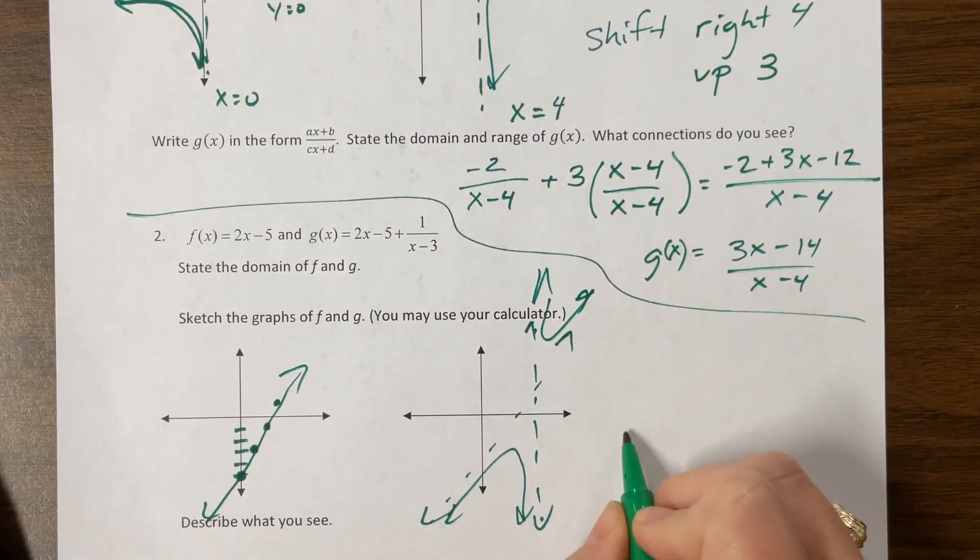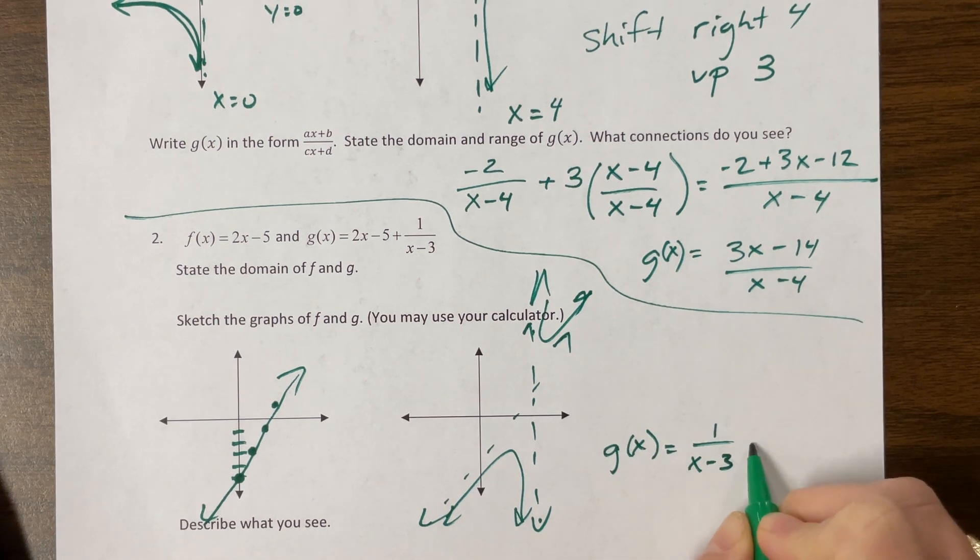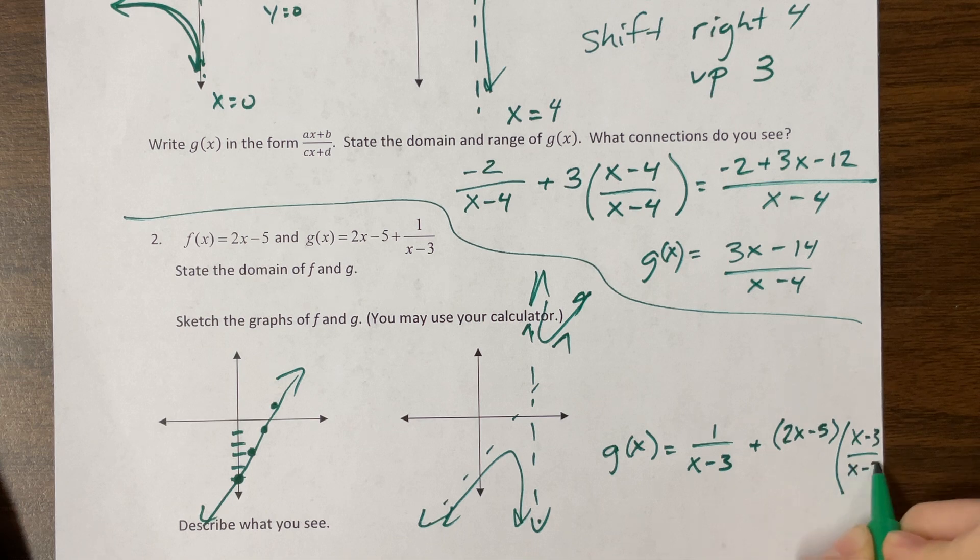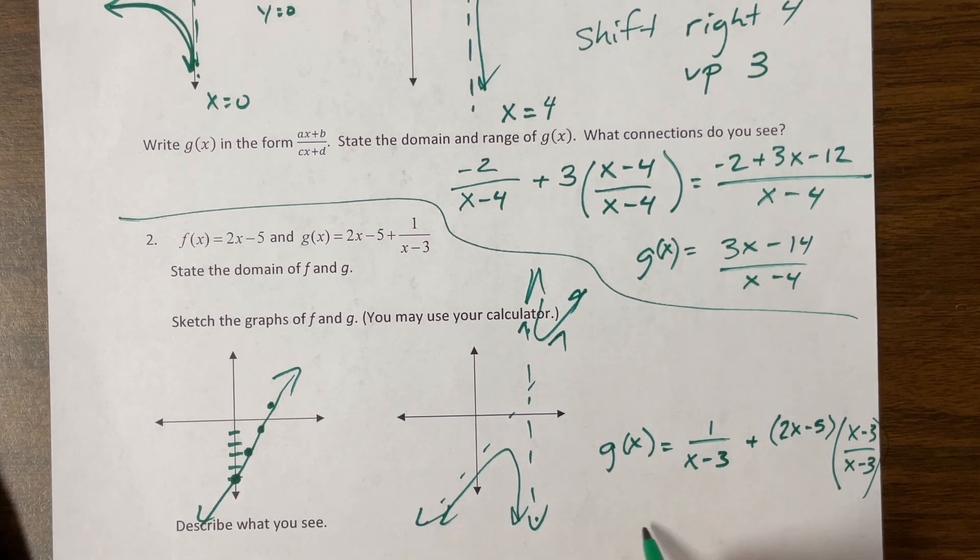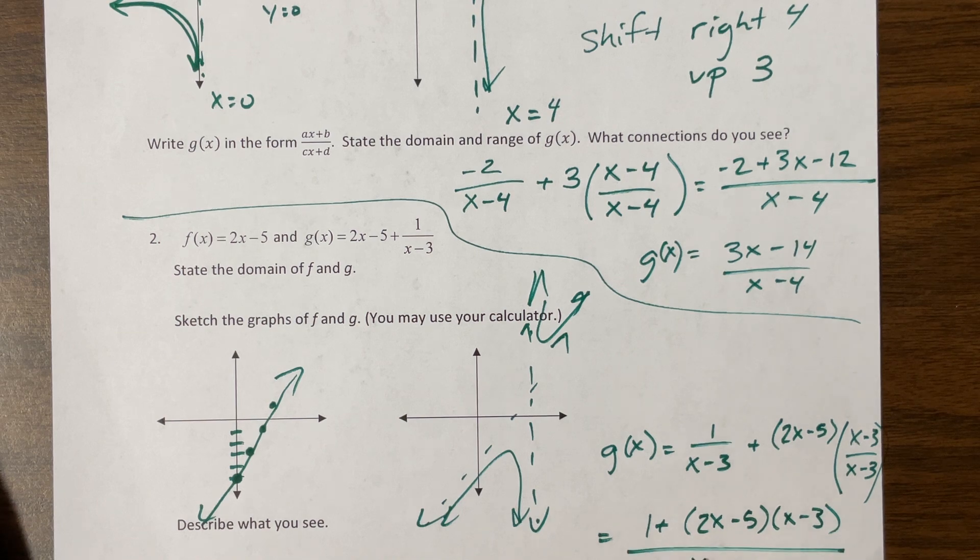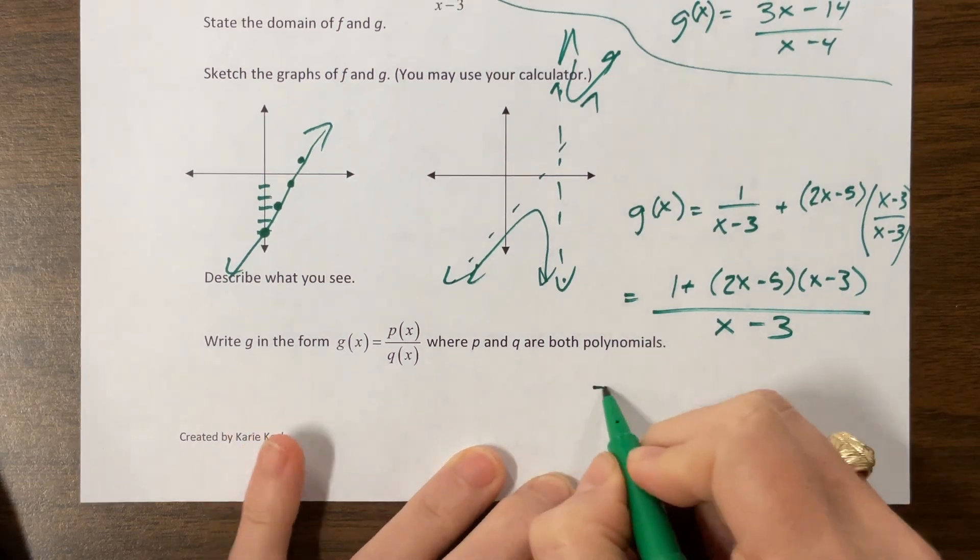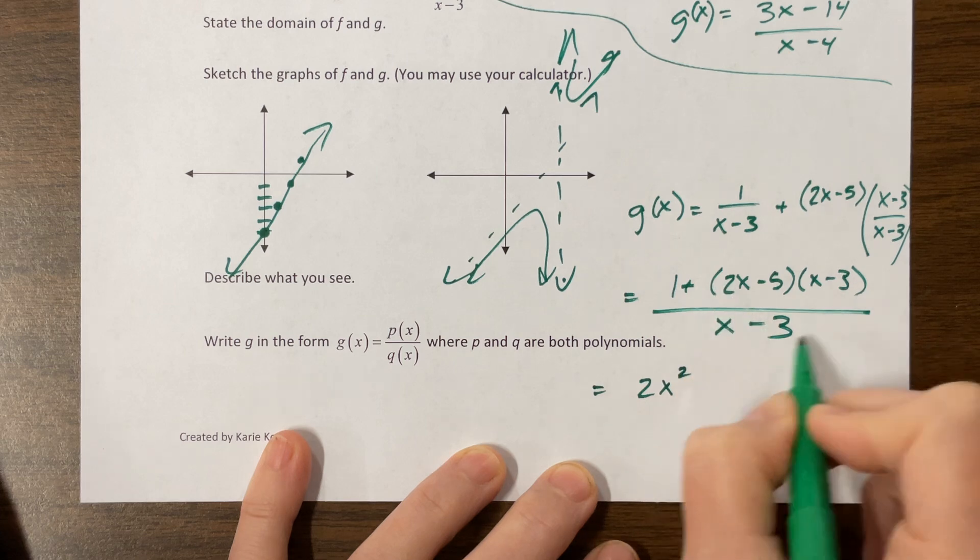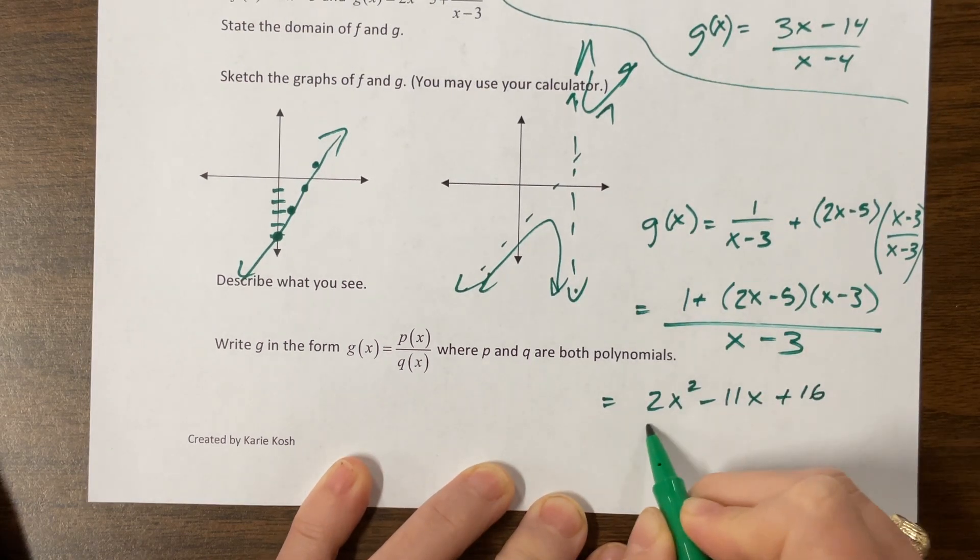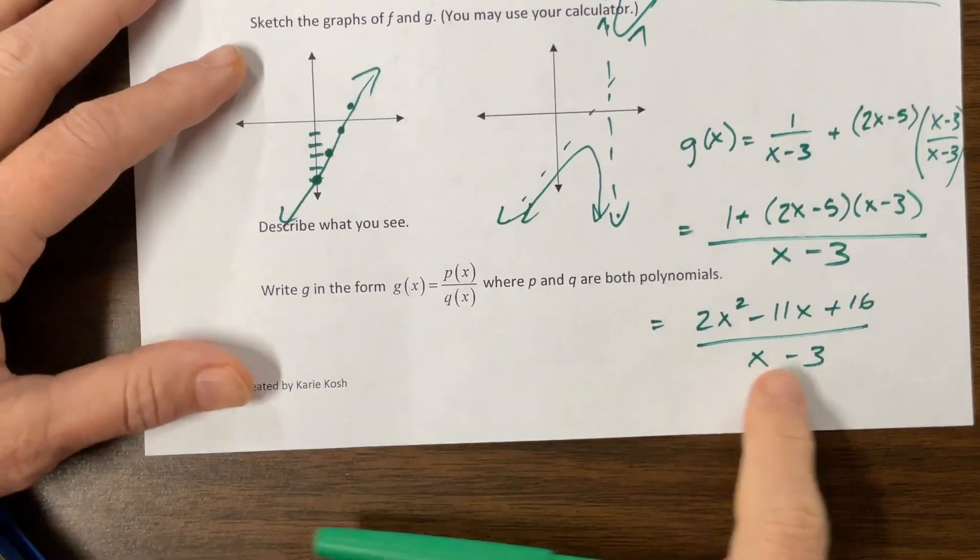So now let's look at what we have here. If my g(x) was equal to, I'm going to switch the order for a second, I want to take this 2x minus 5 and give it that common denominator of x minus 3. Now what I have is 1 plus 2x minus 5 times x minus 3 and everybody has a denominator now of x minus 3. Foiling I get 2x squared, I get minus 5x minus 6x is minus 11x, then I get a plus 15 plus this one right here becomes plus 16 and it's all over x minus 3.